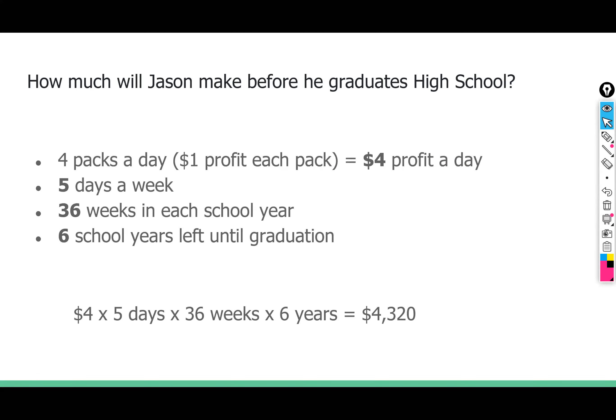Jason sells four packs per day at school to his fellow classmates, and that nets him a profit of $4 a day. With some assumptions, we can determine how much profit Jason will make before he graduates high school. If he makes $4 profit a day, five days a week, there are about 36 weeks in each school year. He's in sixth grade towards the end of his sixth-grade year, so he has six more years of school left. If you do the math, he could make a profit of $4,320 over those six years.